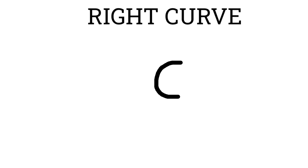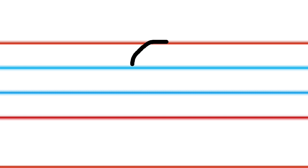Right Curve. For right curve, start from the top red line. Make a round and come down till second blue line. Like this. This is right curve.